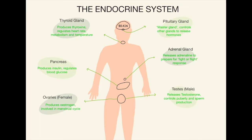Next, we have the endocrine system. Here is a brief summary of six of the main glands and organs used in the endocrine system. The endocrine system is purely for hormones. The pituitary gland in the brain is what we call the master gland, and this controls other glands to release hormones. The thyroid gland produces thyroxine, which regulates your heart rate, metabolism, and temperature. The adrenal gland, which sits on top of your kidneys, releases adrenaline to prepare for a fight-or-flight response. The pancreas produces insulin and regulates blood glucose. The testes release testosterone, controlling puberty and sperm production. And the ovaries, if you're female, produce oestrogen, which is involved in the menstrual cycle.